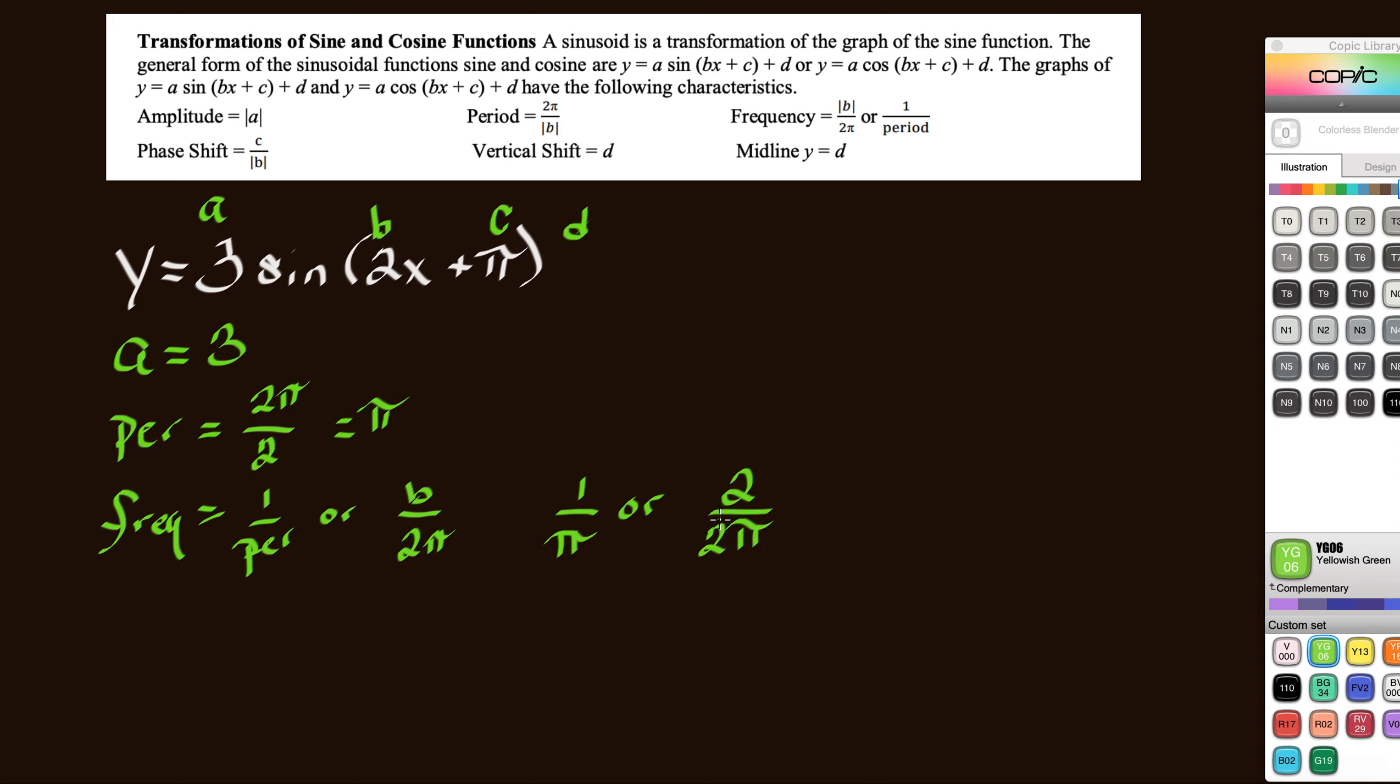Well, guess what? These 2's cancel out with each other. 2 divided by 2 is 1. And so we again would have 1 over pi.